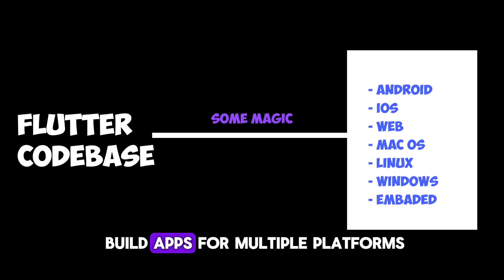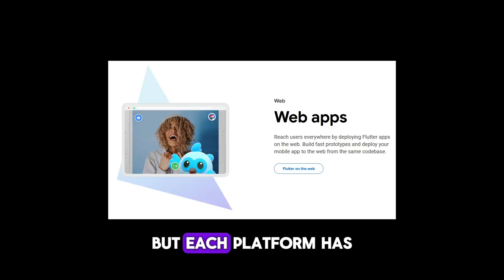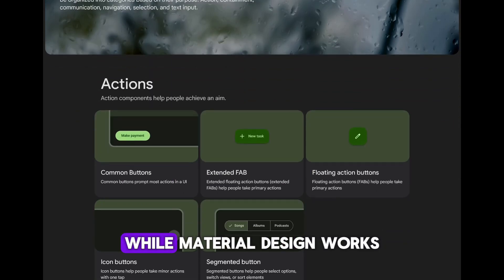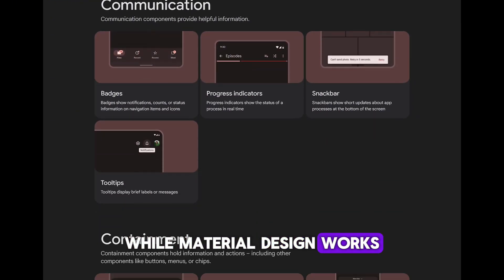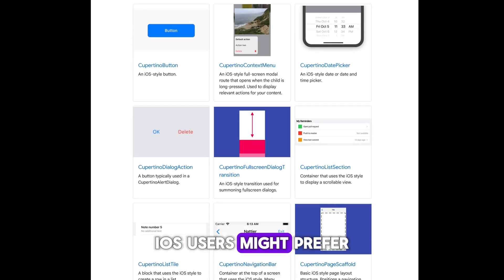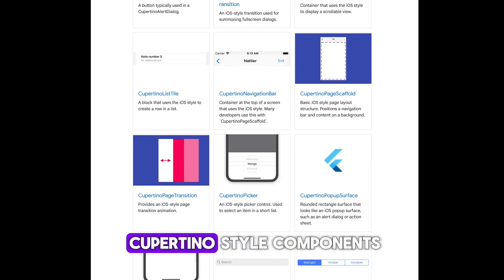Number four: ignoring platform differences can result in a poor user experience. Flutter allows us to build apps for multiple platforms, but each platform has its own guidelines. For instance, while Material Design works well on Android, iOS users might prefer Cupertino-style components. Adapting your UI to match platform expectations is key.